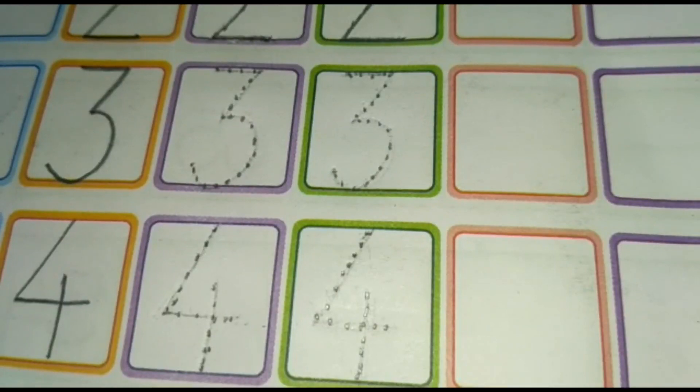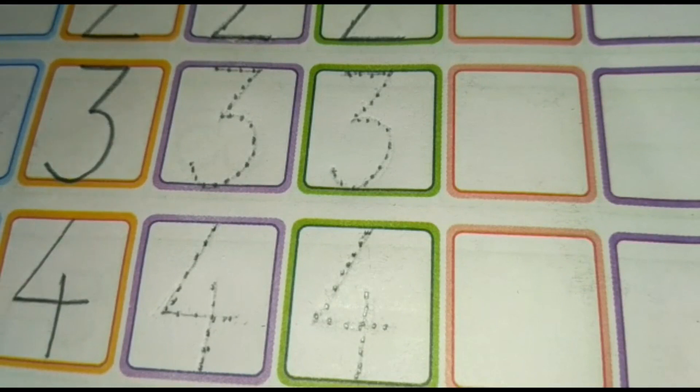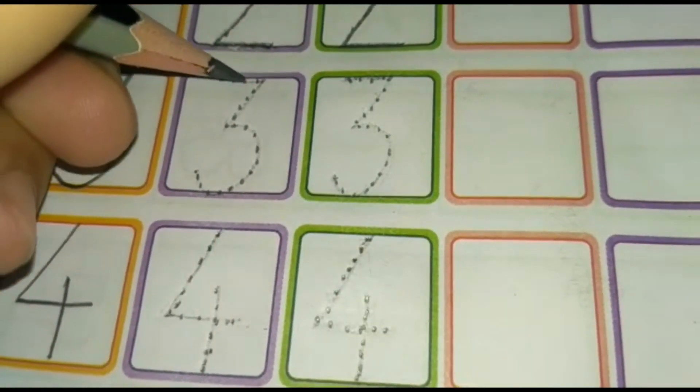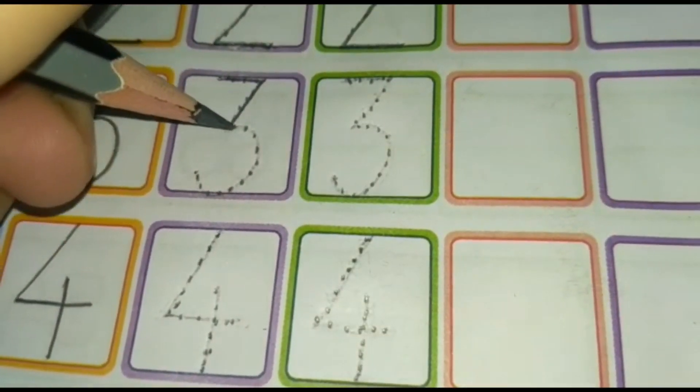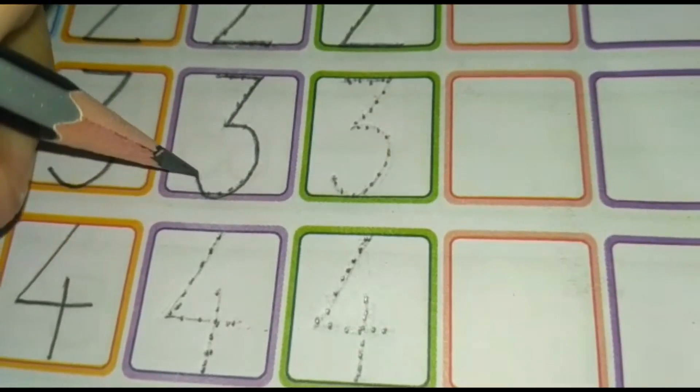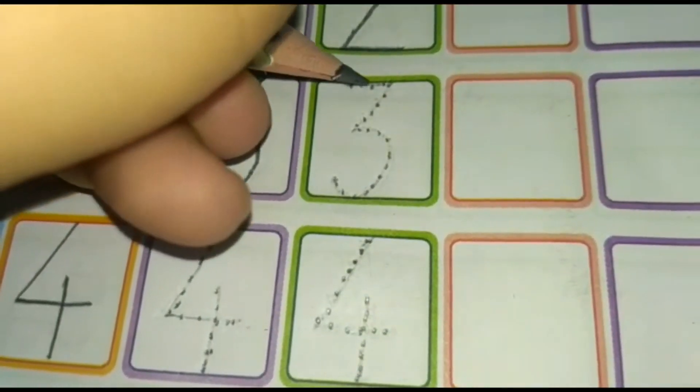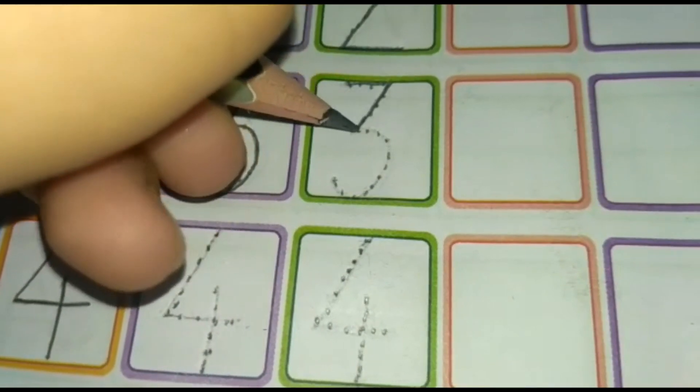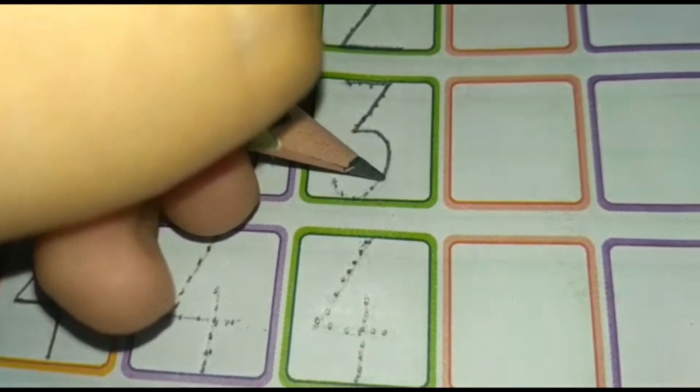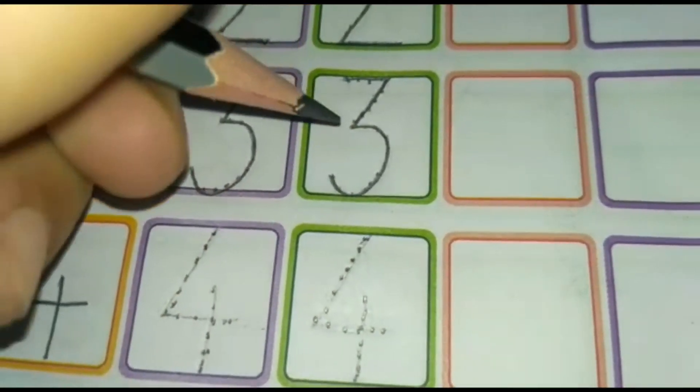Moving on to the next number that is number three. A sleeping line, a slanting line and a curve. Yes, do it again. A sleeping line, a slanting line and a curve. We got the number three.